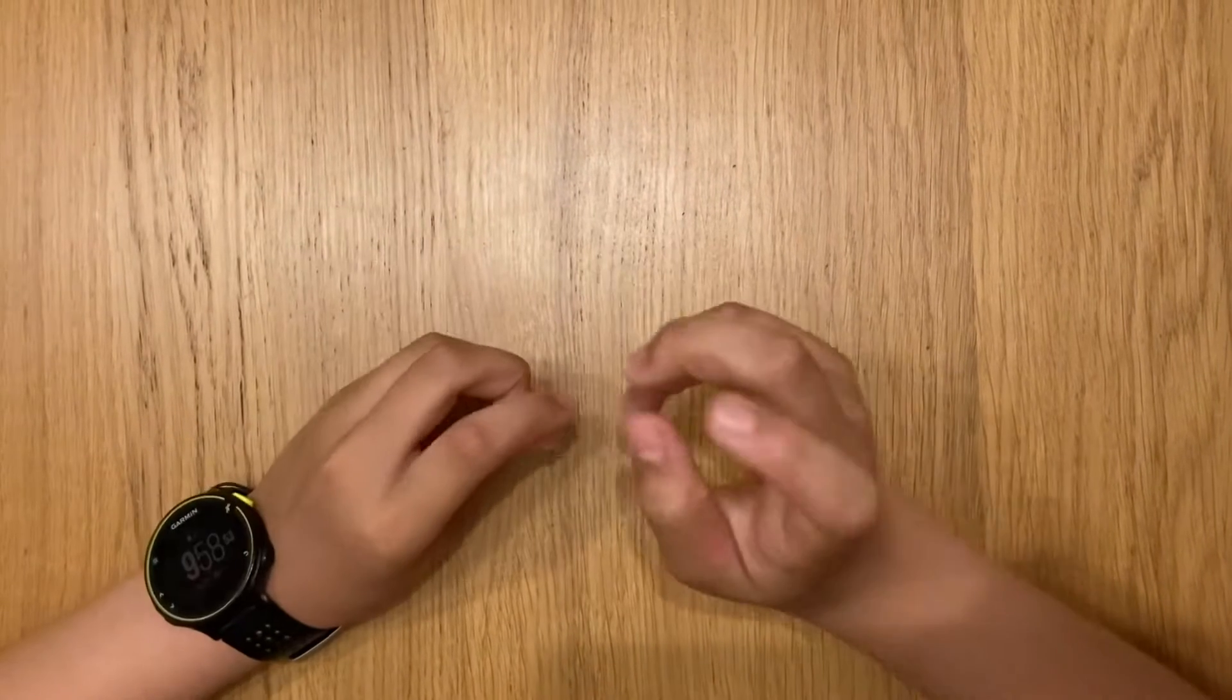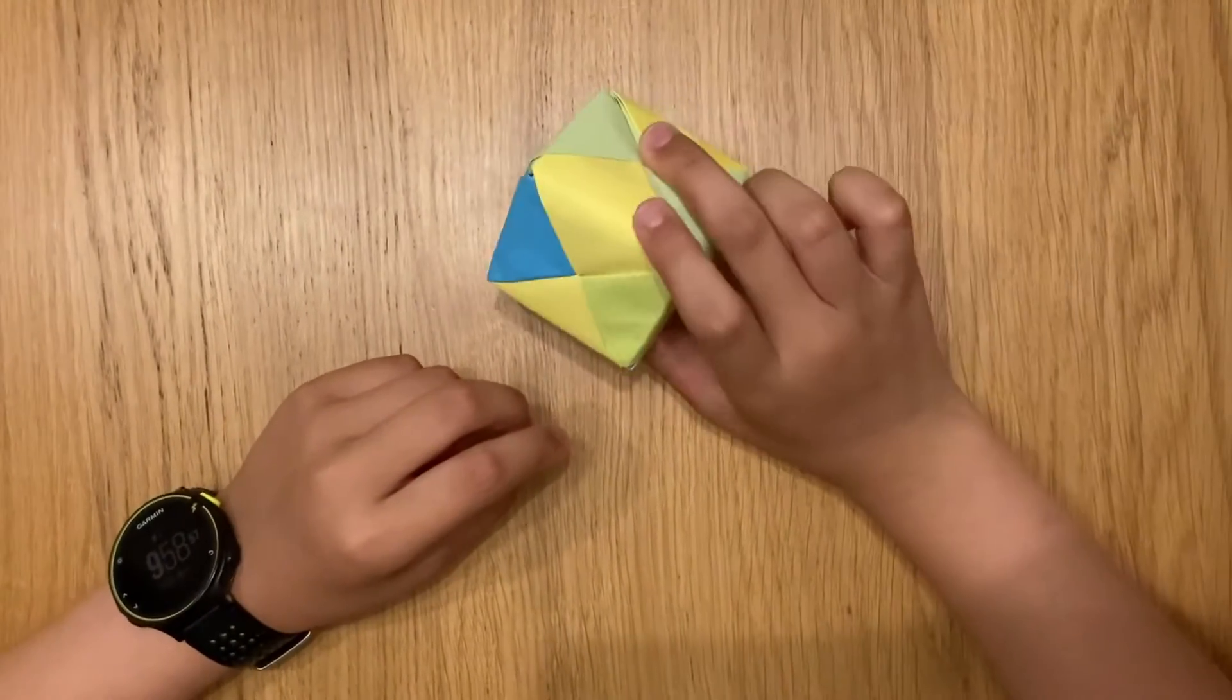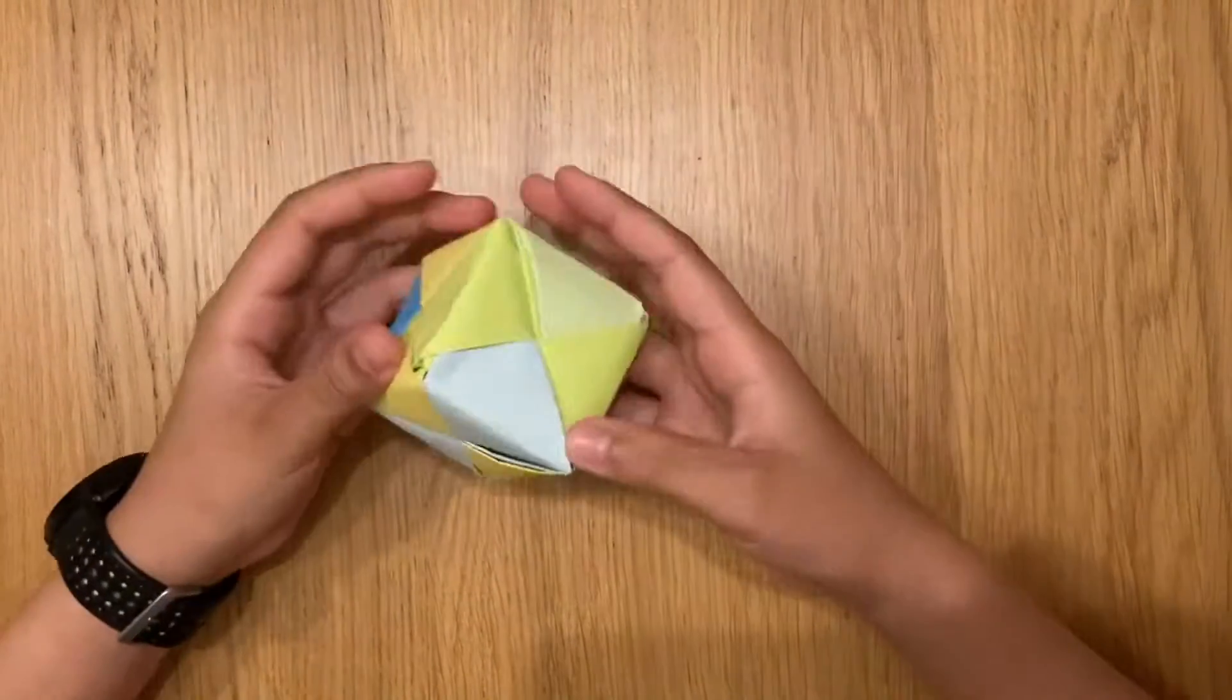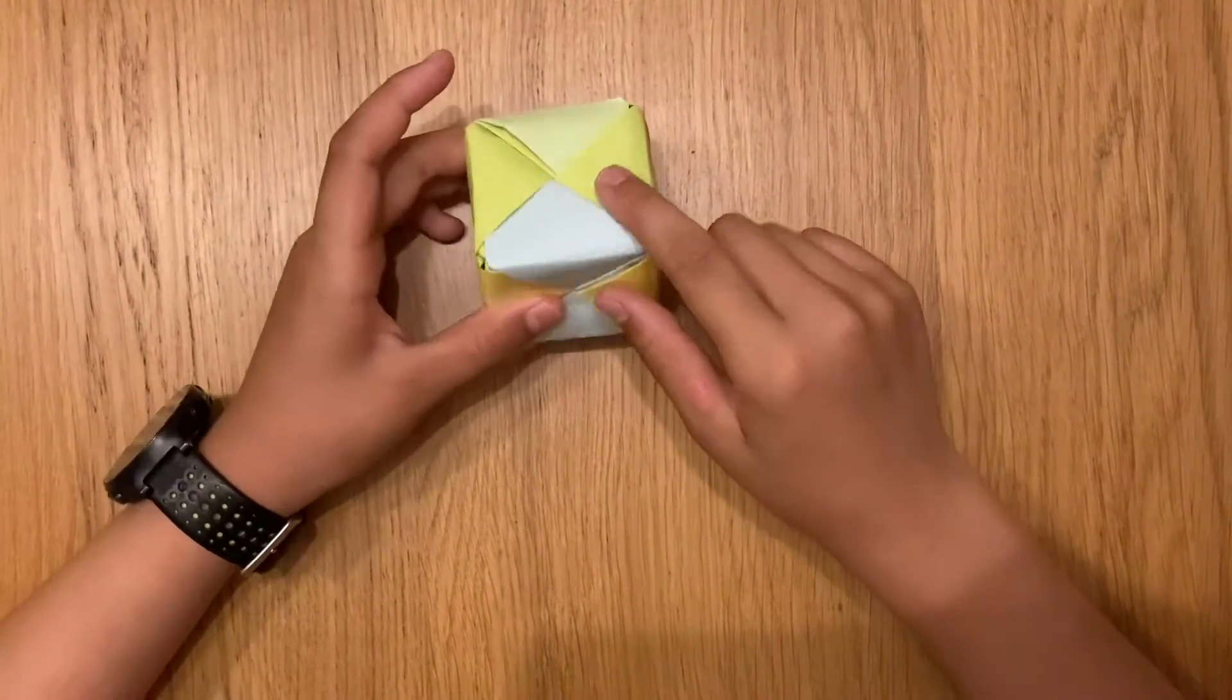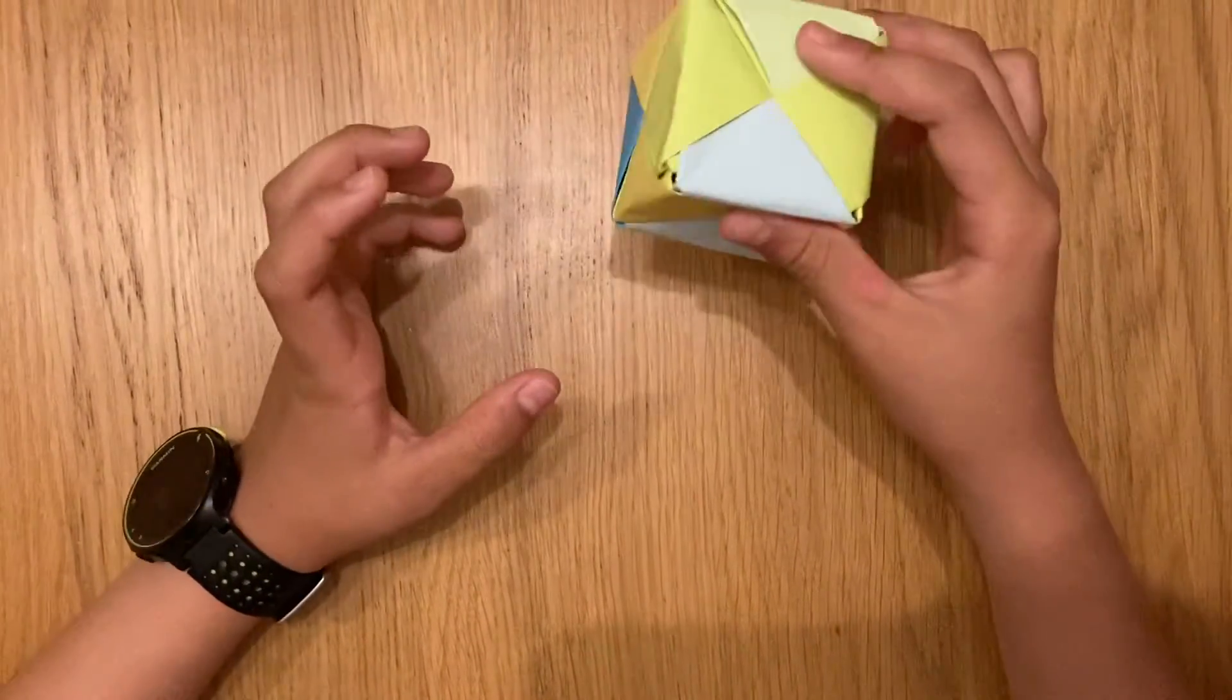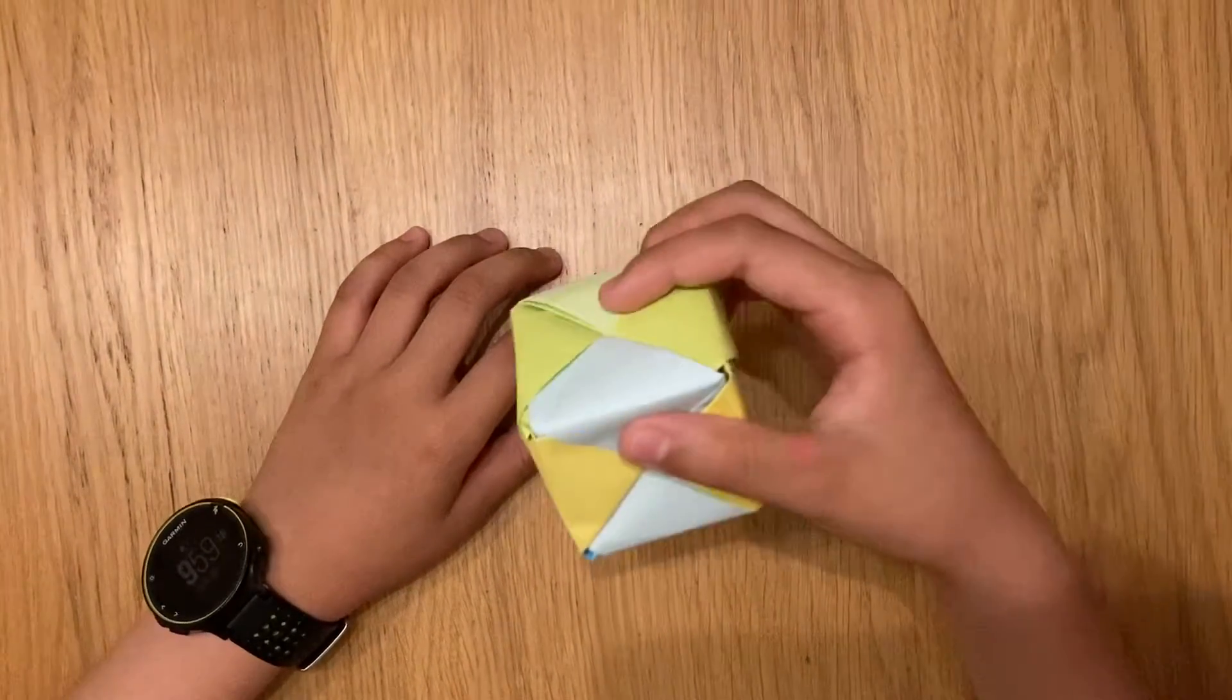Hello everybody, welcome back to a brand new video. Today in this origami lesson, I'm going to make this awesome cube that you can use for anything like stacking them up and putting something cool on there. But for stacking them up, you might need to use cellotape to tape it because it's not that stable. Now let's stop talking and let's get into it.